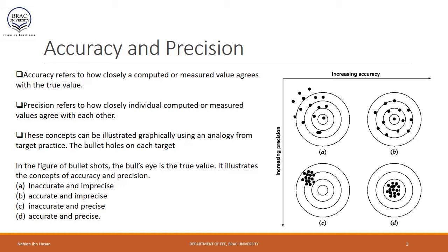Next, we need to define what accuracy and precision mean. We often compare these two terms and unconsciously use them interchangeably, which causes confusion. Accuracy refers to how closely a computed or measured value agrees with the true value, whereas precision refers to how closely individual computed or measured values agree with each other.